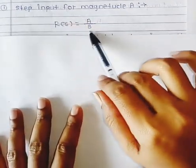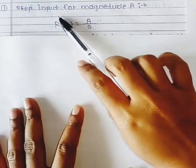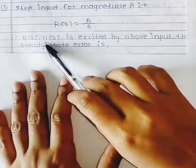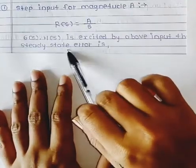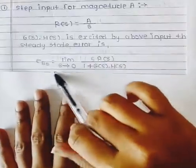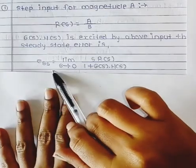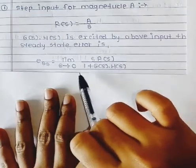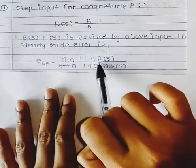We know that R(S) is equal to A by S for step input. G(S) H(S) is excited by above input. The steady state error formula — already we have seen this in previous lecture — steady state error derivation is limit S tends to 0, S times R(S) upon 1 plus G(S) into H(S).